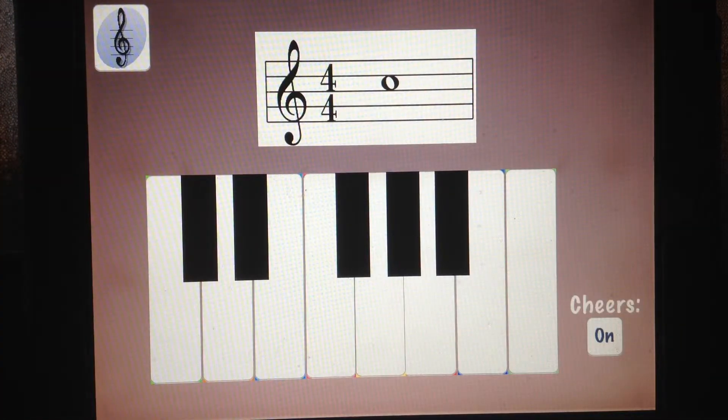When you feel that you have that down, move on to level three. Now we don't have the little boy's voice, we don't have the name of the note. We do have the note on the staff, but we do not have the name of the note on the keys.